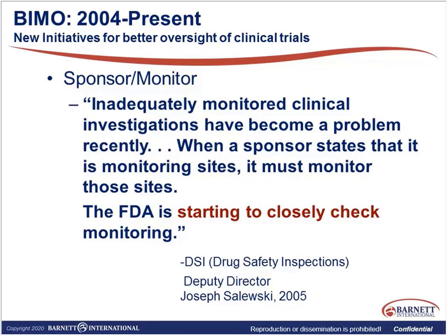What has the FDA found when they go out? They have found that monitoring continues to be a top issue for sponsors and CROs. Recently, the FDA has changed their findings to indicate not just failure to ensure proper monitoring, but failure to select qualified monitors. Monitoring is the window into what's happening at the site level. The FDA's drug safety inspections note that inadequately monitored clinical investigations have become a problem. When a sponsor states that it is monitoring sites, it must monitor those sites, and the FDA is starting to closely check that monitoring.